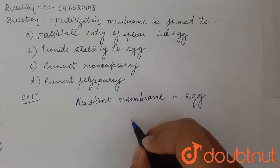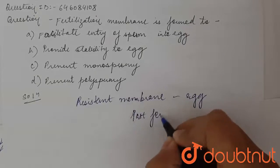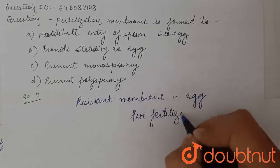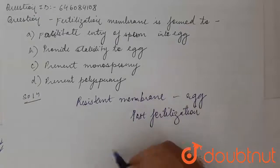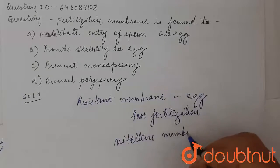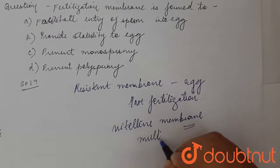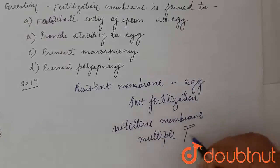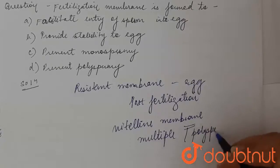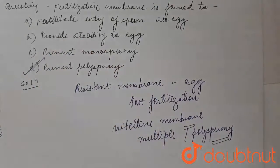It forms following fertilization — post-fertilization — by the thickening and separation of the vitelline membrane from the cell surface, and it prevents multiple fertilization, or polyspermia. So the answer to the question is option D: prevent polyspermia.